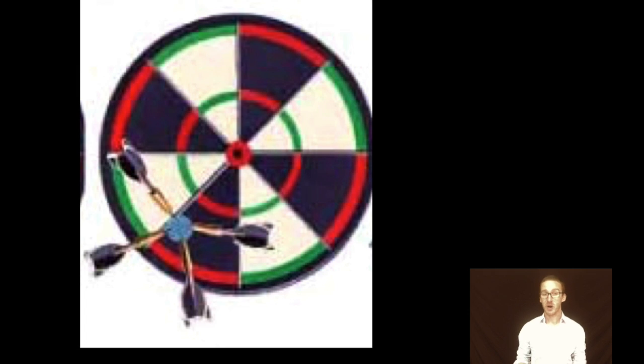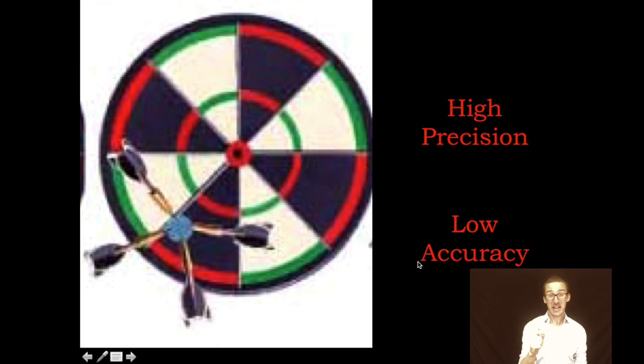Now, as I take a look at these darts, they have completely missed the bullseye, and so I would say these are highly inaccurate shots. However, they are all in the exact same spot. They're very close together, and so even though this person was very precise, they could hit the same spot over and over again, they didn't get the darts where they should be in the bullseye. So high precision, low accuracy.